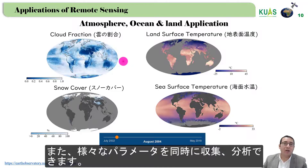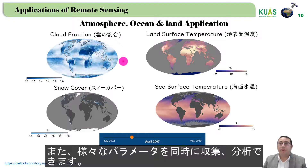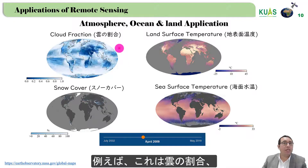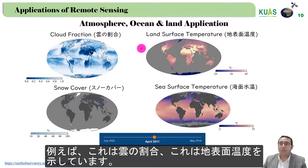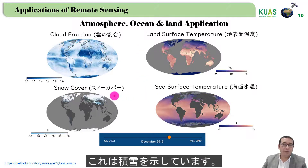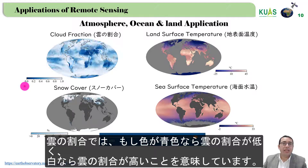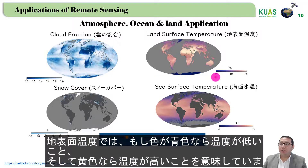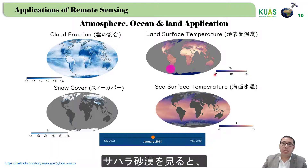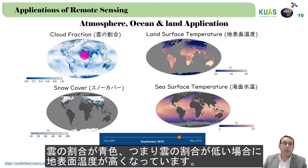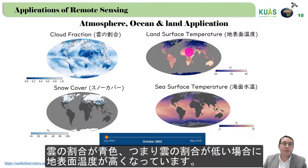We can also correlate and check many parameters at the same time — for example, cloud fraction, land surface temperature, sea surface temperature, and snow cover. For cloud fraction, blue means less cloud coverage and white means high cloud coverage. For land surface temperature, blue means low temperature and yellow means high temperature. If we consider the Sahara Desert, the cloud coverage is low, resulting in high land surface temperature.